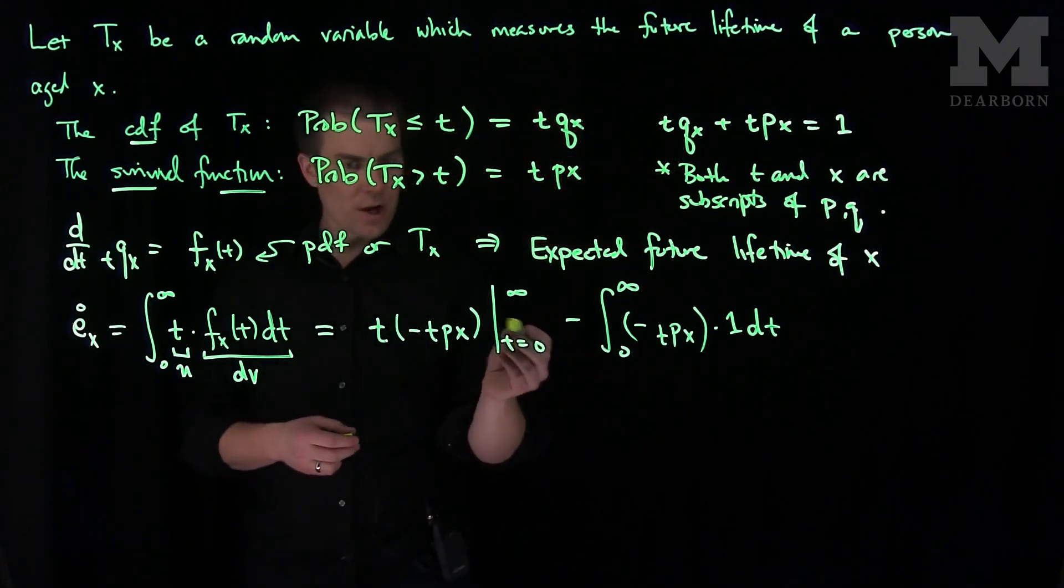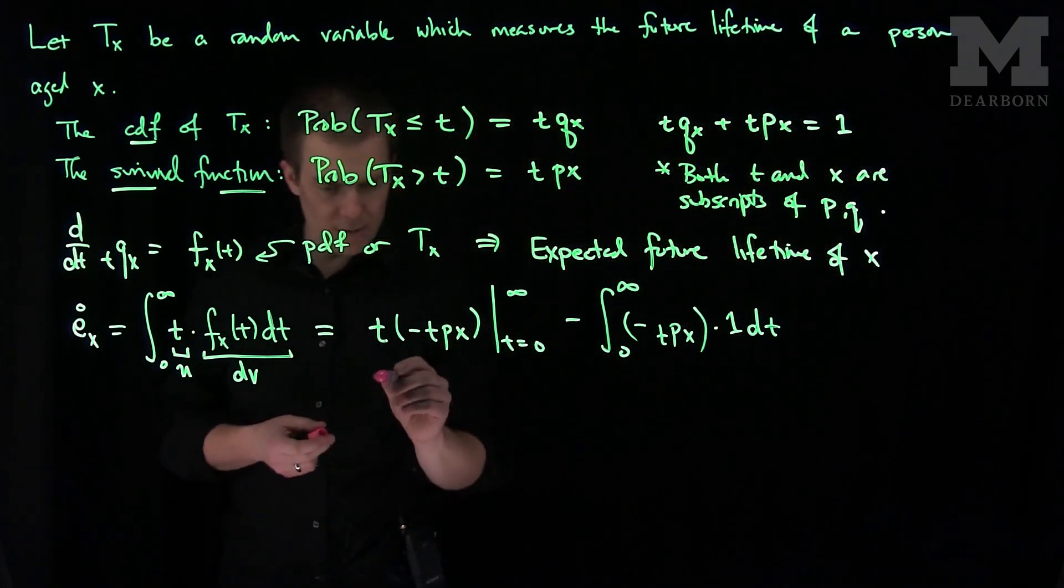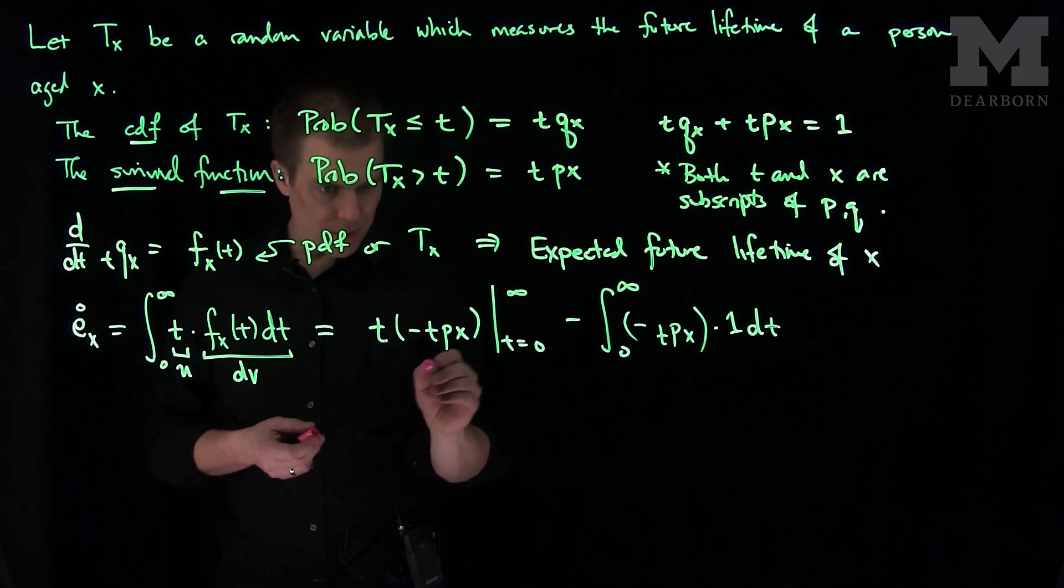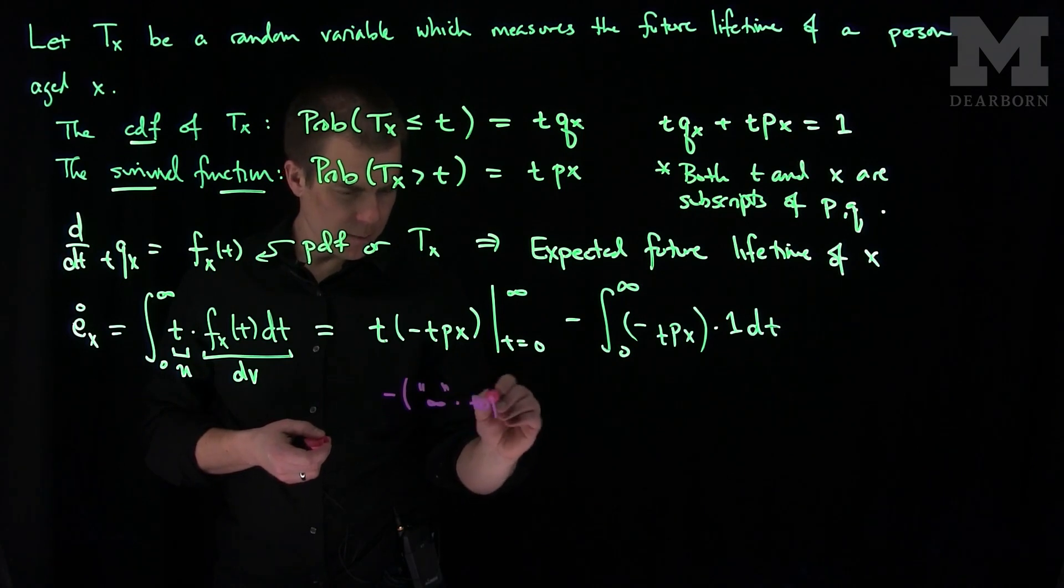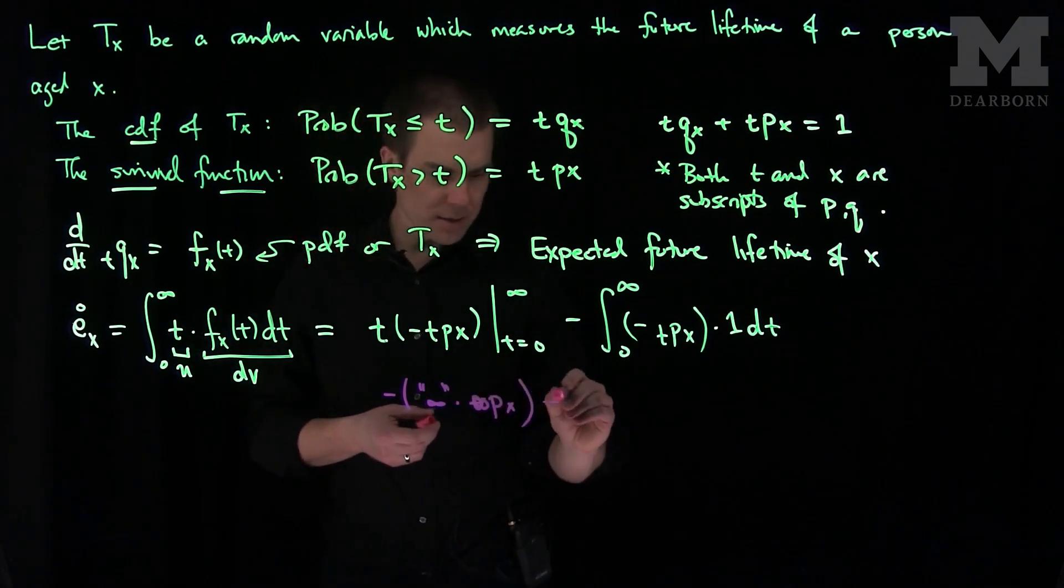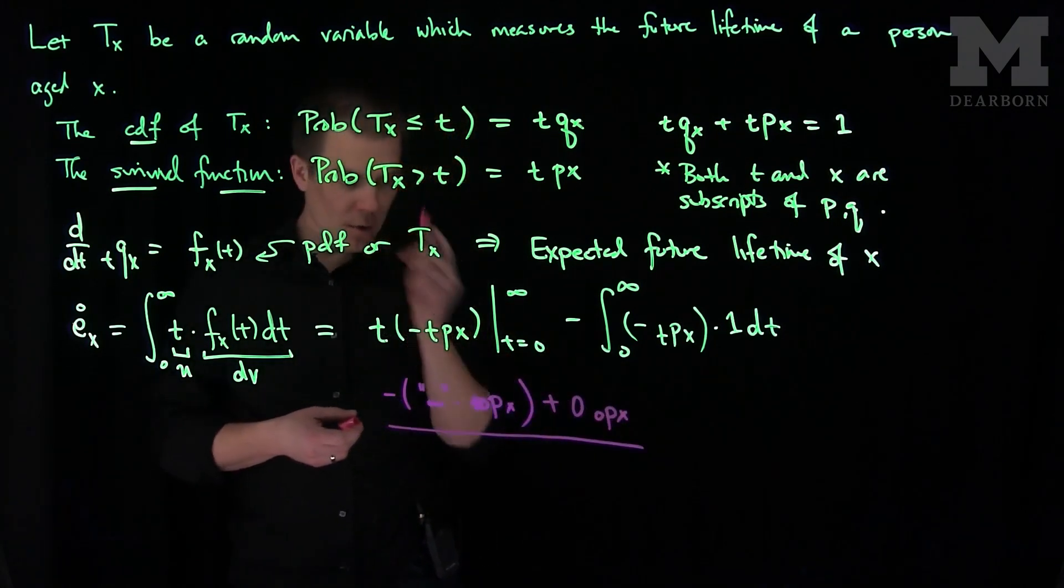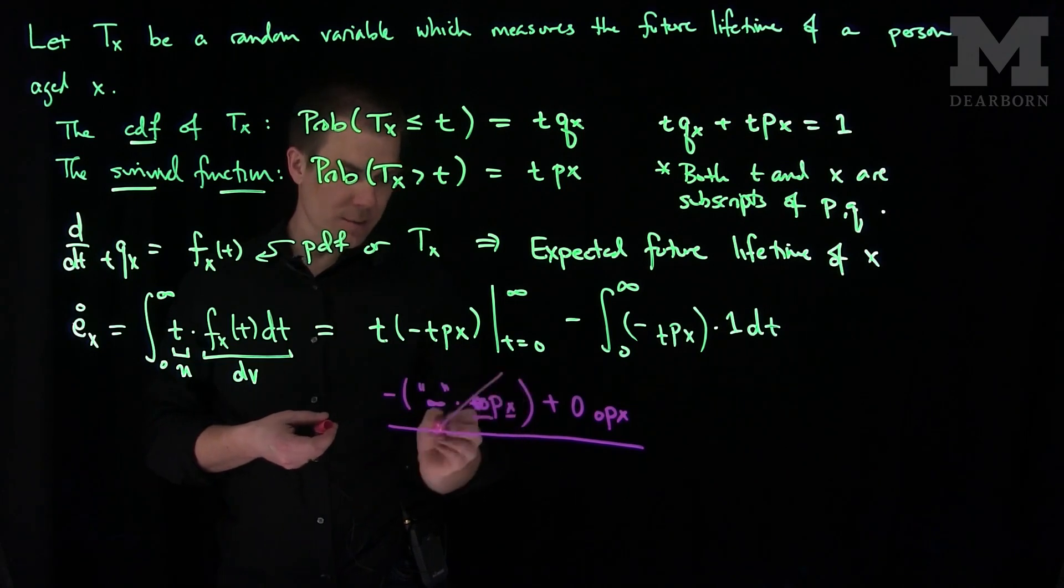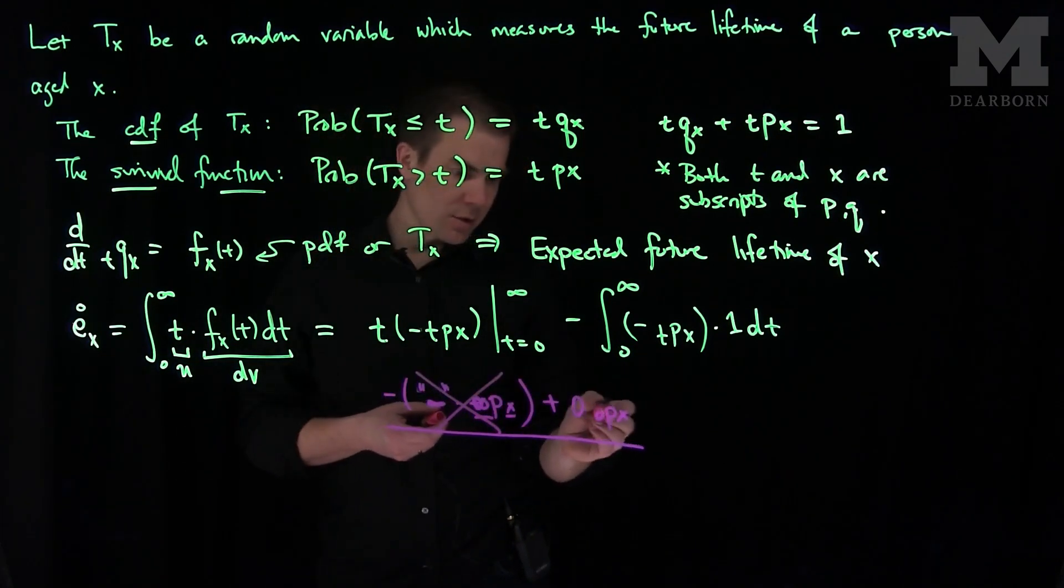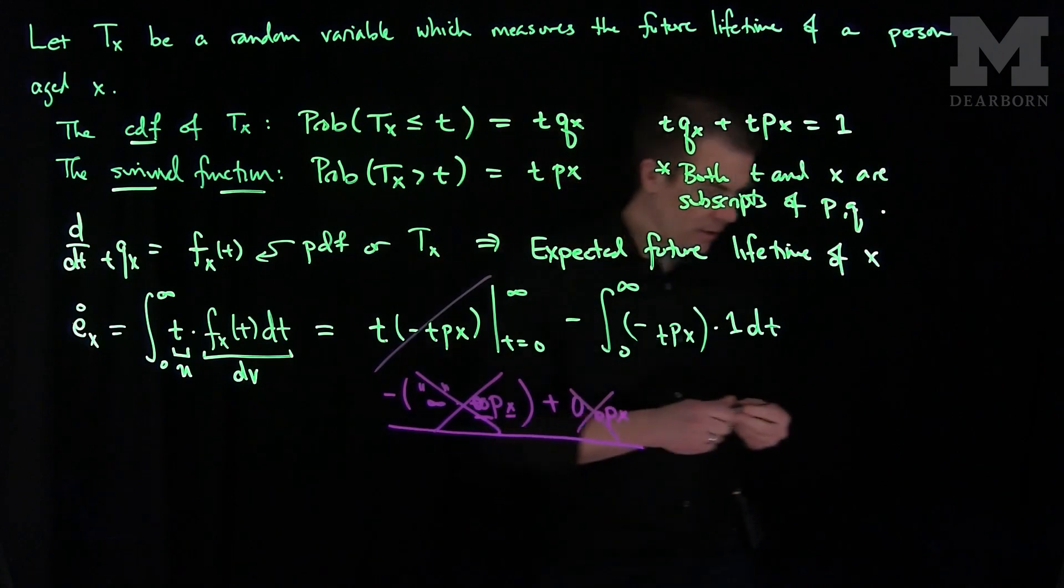Let's look at these limits of integration. If we write these out in terms of limits, the boundary terms are: as t approaches infinity, we have negative t times infinity-px, and then plus 0 times 0px. The probability that a person aged x survives an infinite number of years is 0 past a certain point, so this limit is 0. Similarly, the probability that you survive 0 years is 1, but you're multiplying that by 0, so that's also 0. These boundary terms vanish when you plug in 0 and infinity respectively.